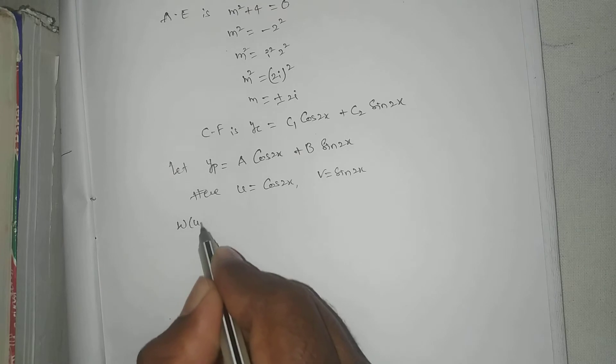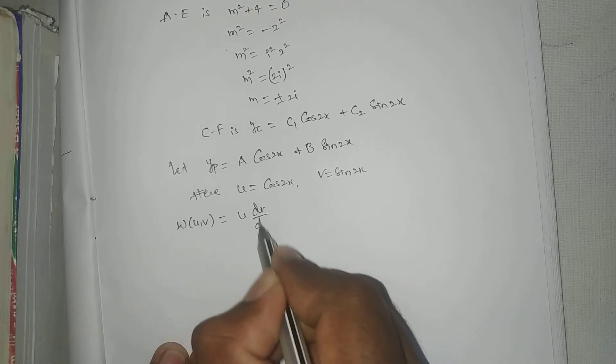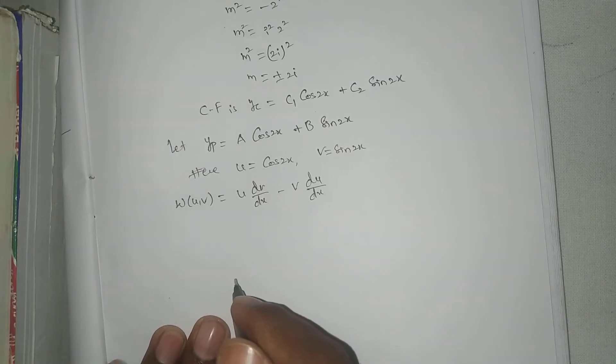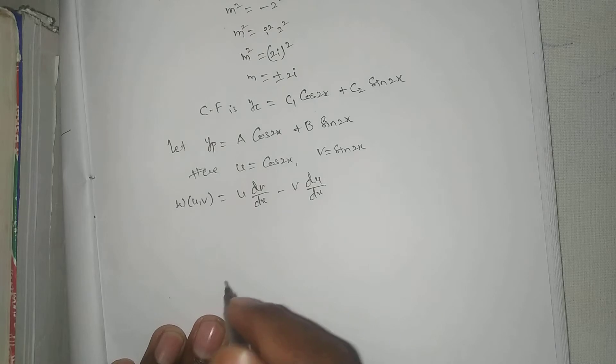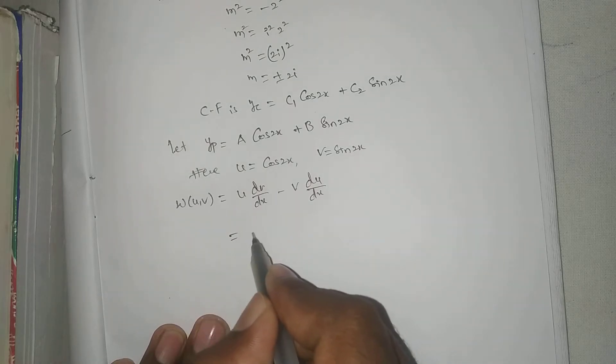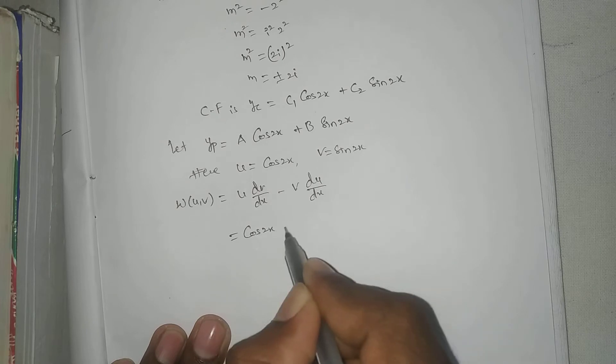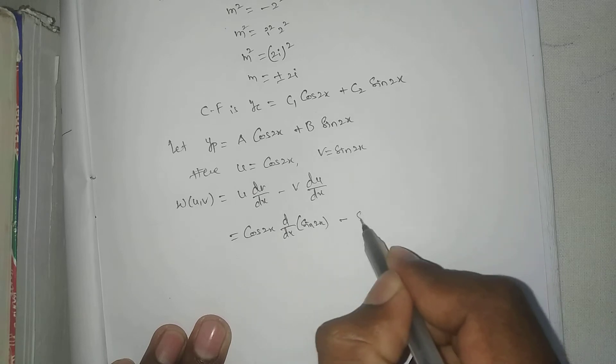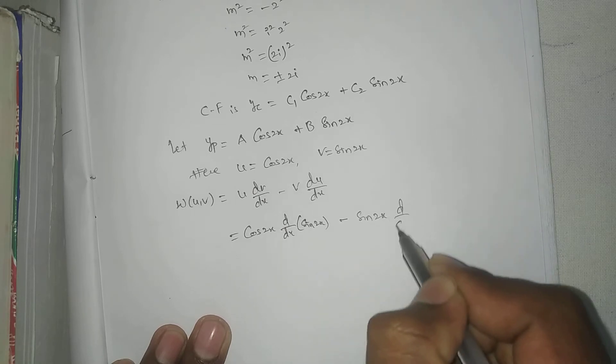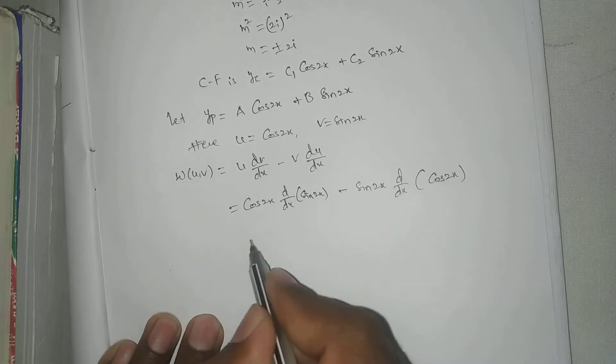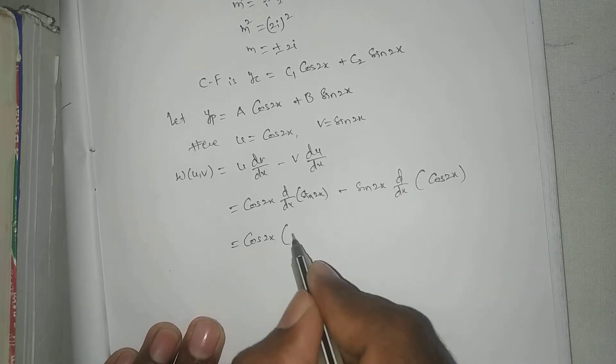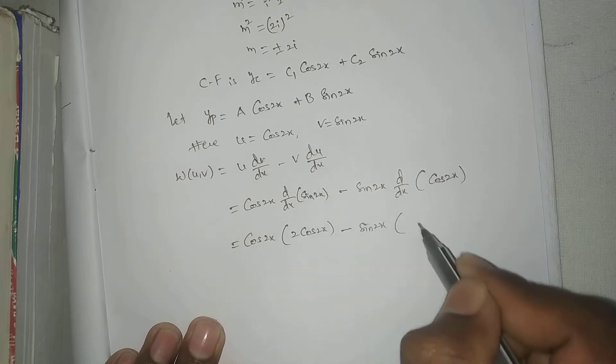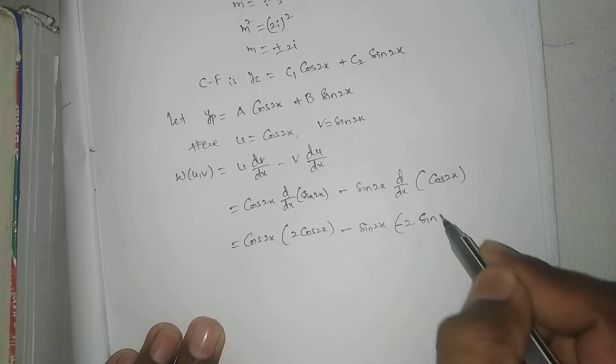Now, w of u comma v equal to u into dv by dx minus v into du by dx. That equal to cos 2x, d by dx into sin 2x minus sin 2x, d by dx into cos 2x. That equal to cos 2x into 2 cos 2x minus sin 2x into minus sin 2x.